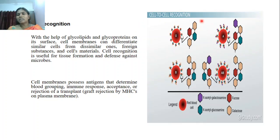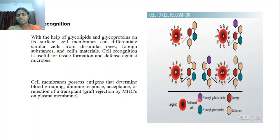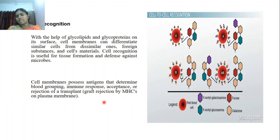This diagram represents the plasma membrane of O blood group people. The outermost structures represent the glycoproteins, which differ in all four blood group people: O, A, B, and AB. Shown here are N-acetylgalactosamine, fucose, N-acetylglucosamine, and galactose. The cell membrane possesses antigens that determine blood grouping. The immune response, acceptance or rejection of transplant, is mainly because of these molecules — graft rejection is mediated by MHC on the plasma membrane.